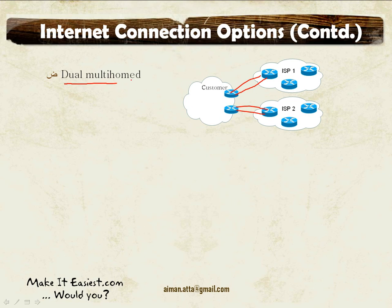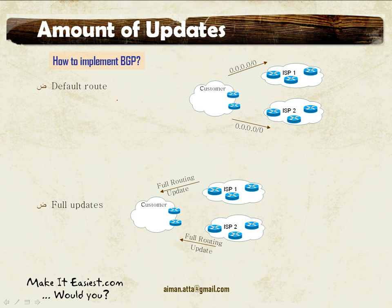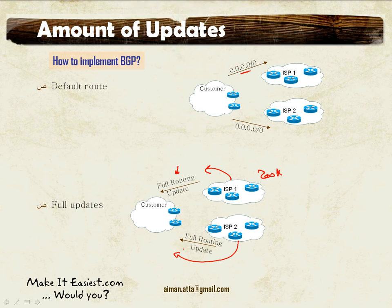Using BGP in a dual multi-homed environment raises an important question: how many updates will you receive? You could use BGP between the customer and the ISP and only receive default routes, or on the other hand you could be receiving the full routing table — for example, 200,000-plus routes from ISP1 and from ISP2 as well.